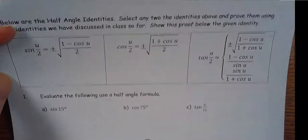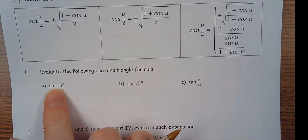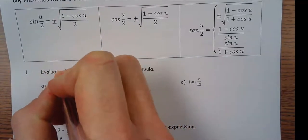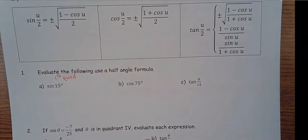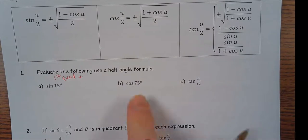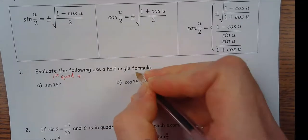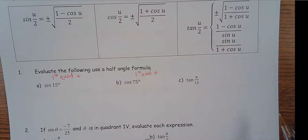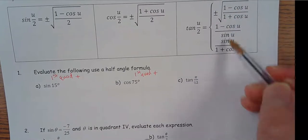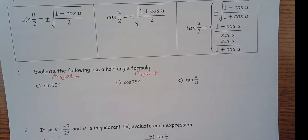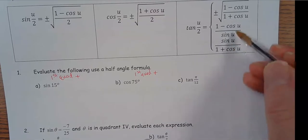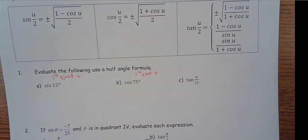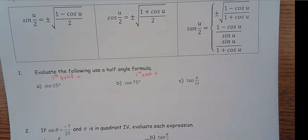Evaluating number one using half angle: I want to do sine 15. That angle is in the first quadrant, so sine is your y-coordinate, and in the first quadrant y is positive. For cosine 75, that's also first quadrant, so x-coordinate is also positive — I want the positive version. For tangent, if you're using the sine-over-cosine form, the sign takes care of itself. But if you use the cosine-only formula, you have to figure it out yourself.